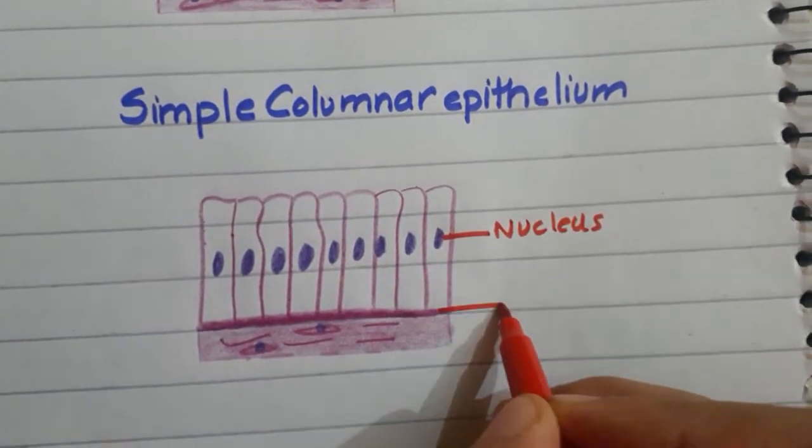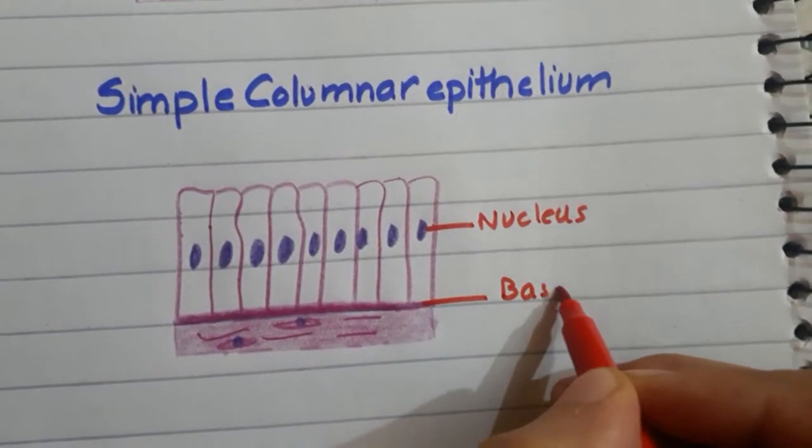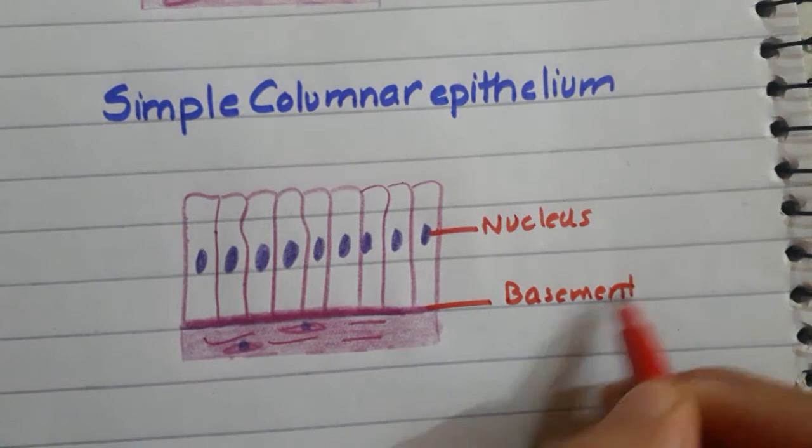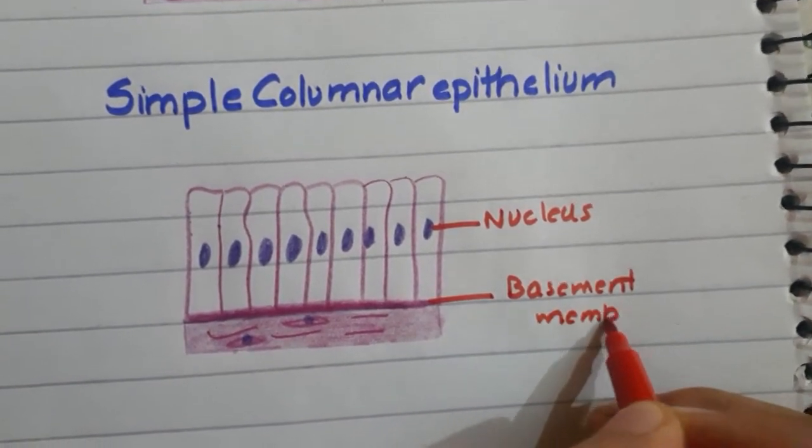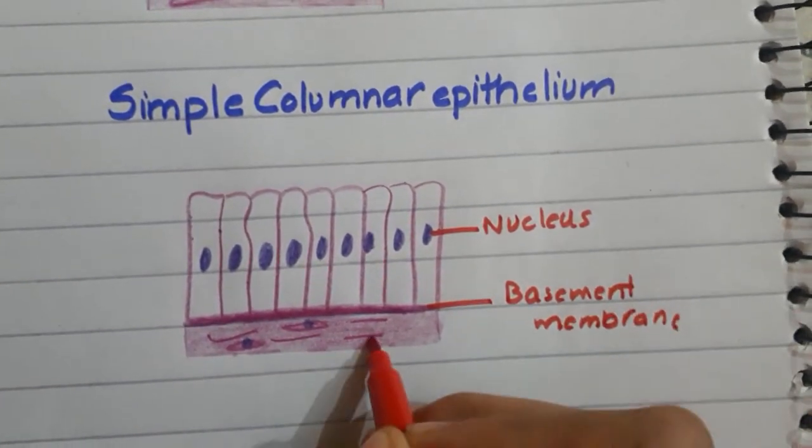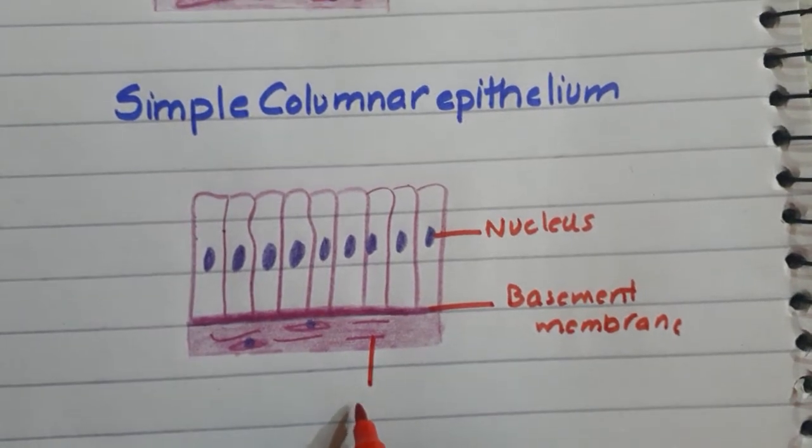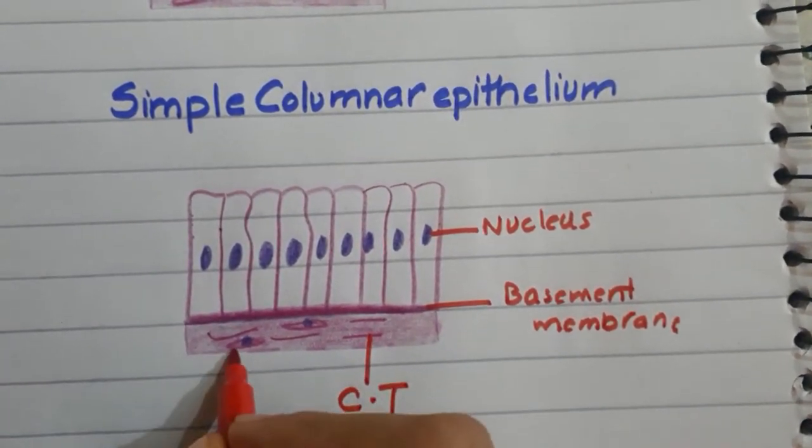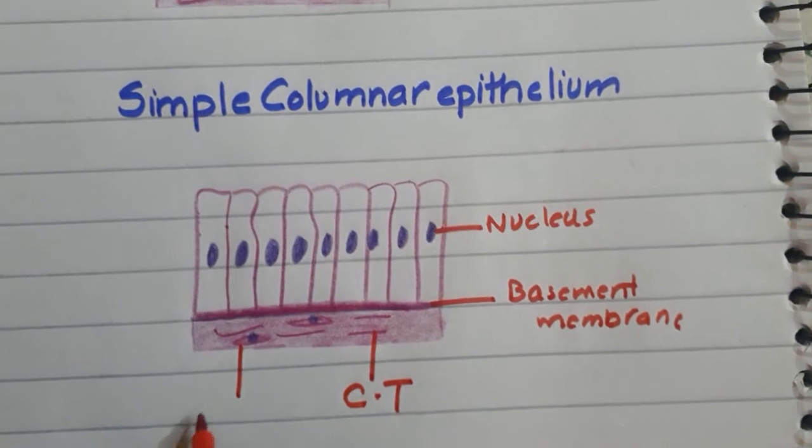We have this dark color basement membrane, these lines, connective tissues, this circle series, and blood capillary.